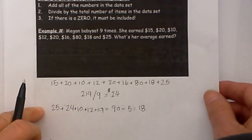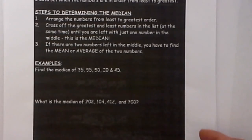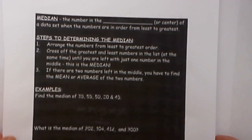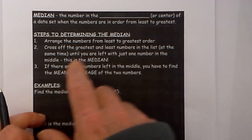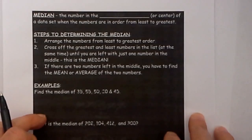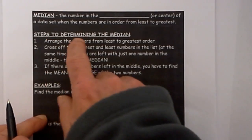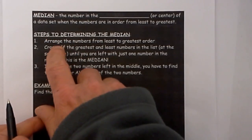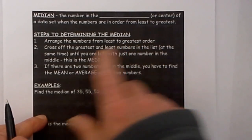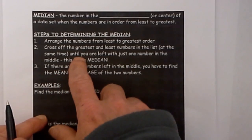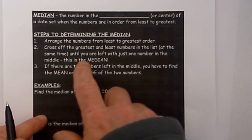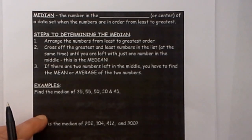Now let's move on to another measure of center and that is the median. The median is the number in the middle of a data set when the numbers are in order from least to greatest. Steps for determining the median: Arrange the numbers from least to greatest order. Cross off the greatest and least numbers in the list at the same time until you are left with just one number in the middle. This is the median. If there are two numbers left in the middle you have to find the mean or average of the two numbers.